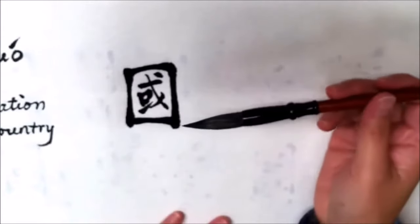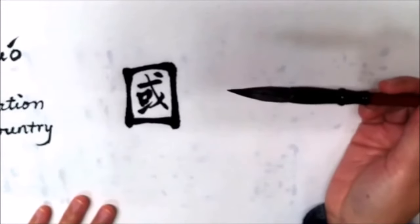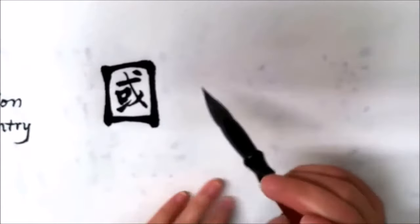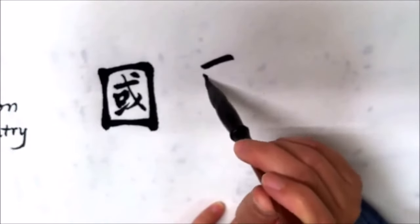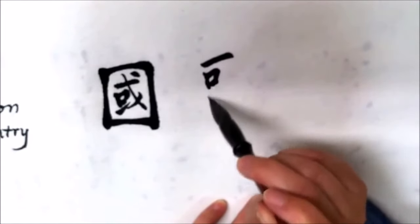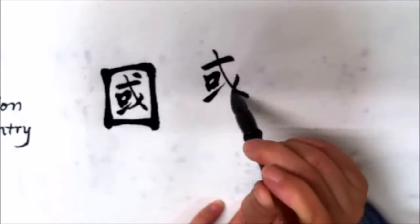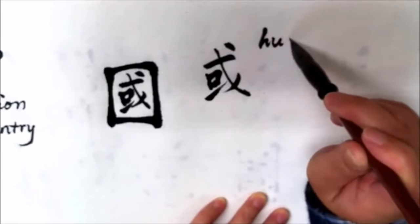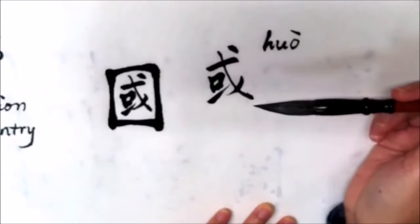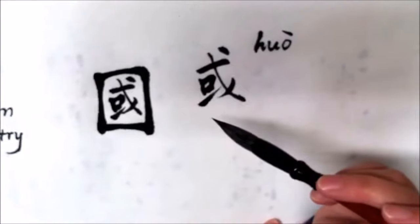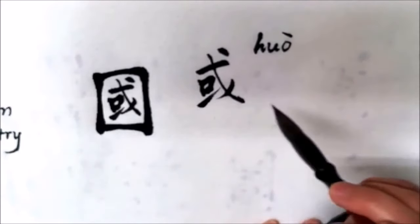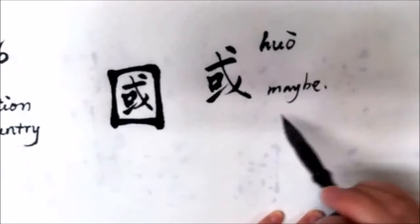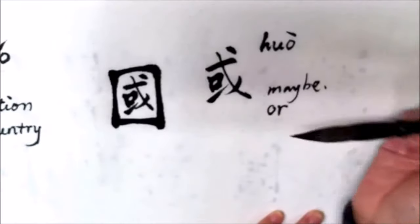Please let me explain the meaning of each part of this character. Inside 国, we see the character 或 (huò). This character sounds huò. Perhaps you are confused now, as we know that 或 (huò) means maybe, perhaps, or. That's the meaning of this character 或 (huò).